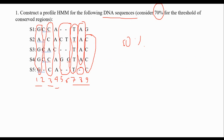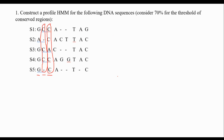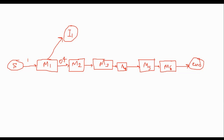From the first conserved region to the second one — M1 to M2 — in two cases I can go directly, and in three cases I see an inserted letter. So the relative frequencies are: 60% for going to the inserted state I1, and 40% for going directly to M2. These two together form a probability distribution.